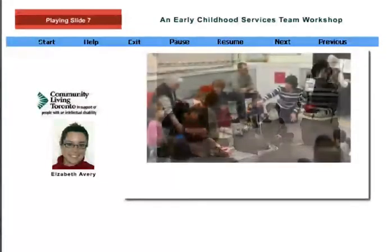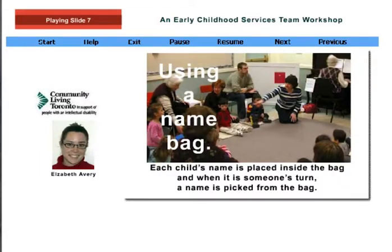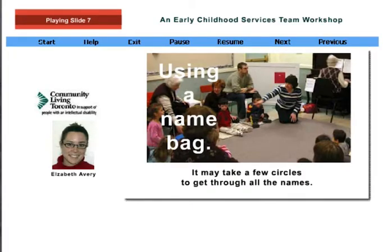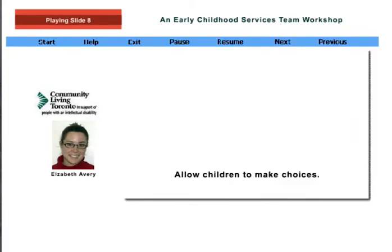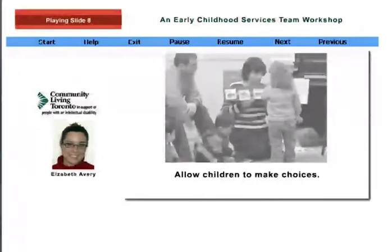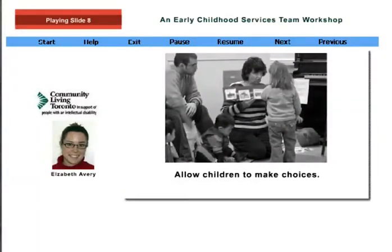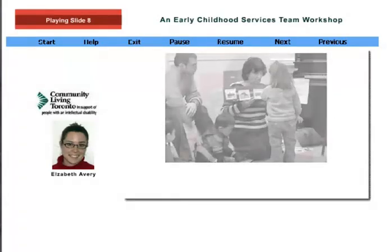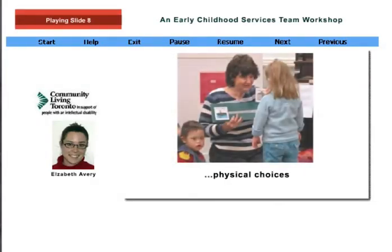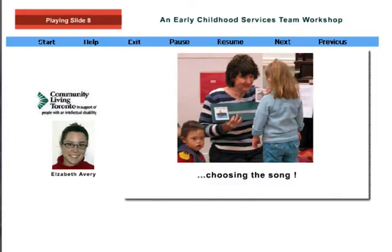One idea is to have a name bag. Each child's name is placed inside the bag, and when it is someone's turn, a name is picked from the bag. It may take a few circles to get through all the names. Allow children to make choices as much as possible — being able to choose makes a child feel valued and builds self-esteem. Choices may be physical, such as choosing between picture symbols or between props, or a child might choose the actual song to be sung. Remember to be flexible, as things don't always go as planned.